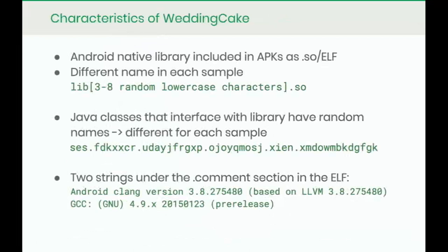How can you recognize Wedding Cake? First, it's an ELF or .SO file in the APK. Usually it is three to eight random lowercase letters as the filename. The Java code that interacts with this native library also always has random-lettered class names. This tells us it is distributed as source code, dynamically generating the class names and library names every time they build the application.